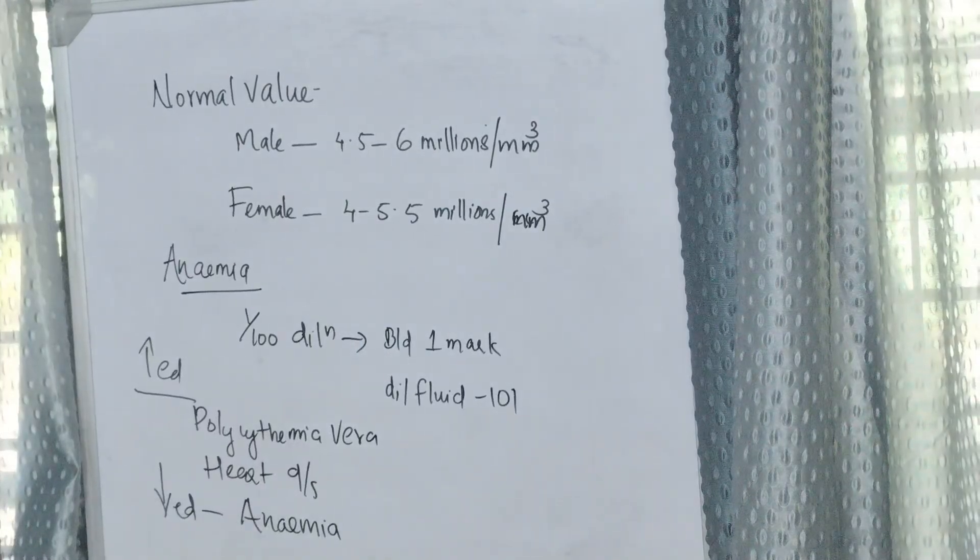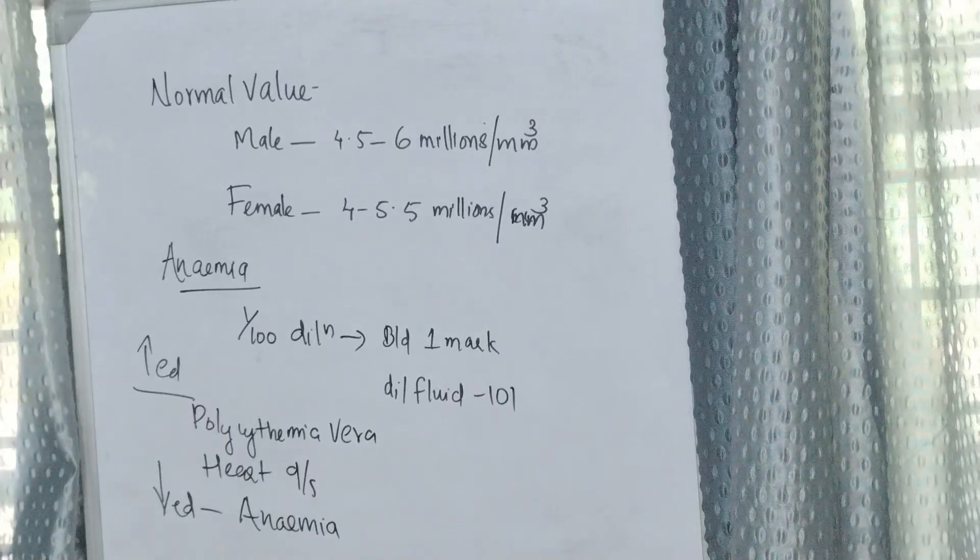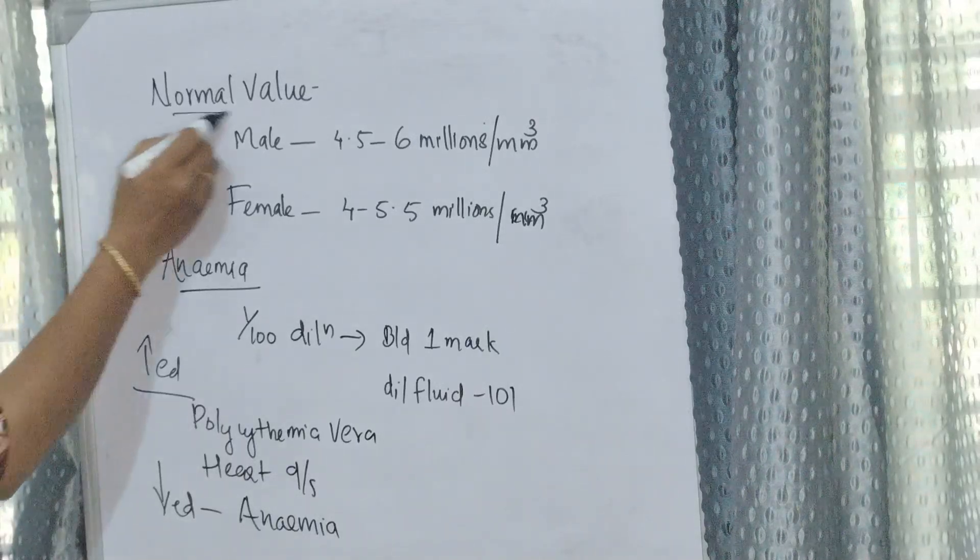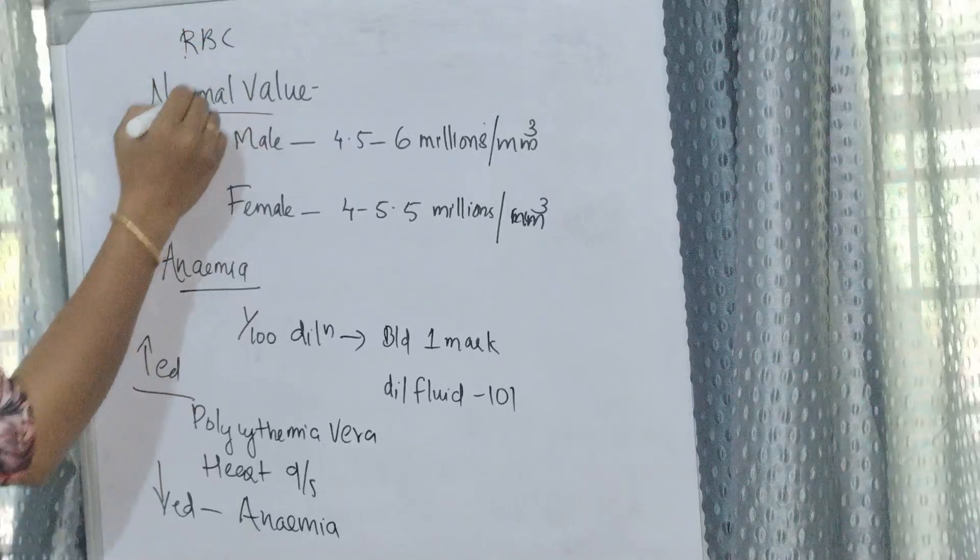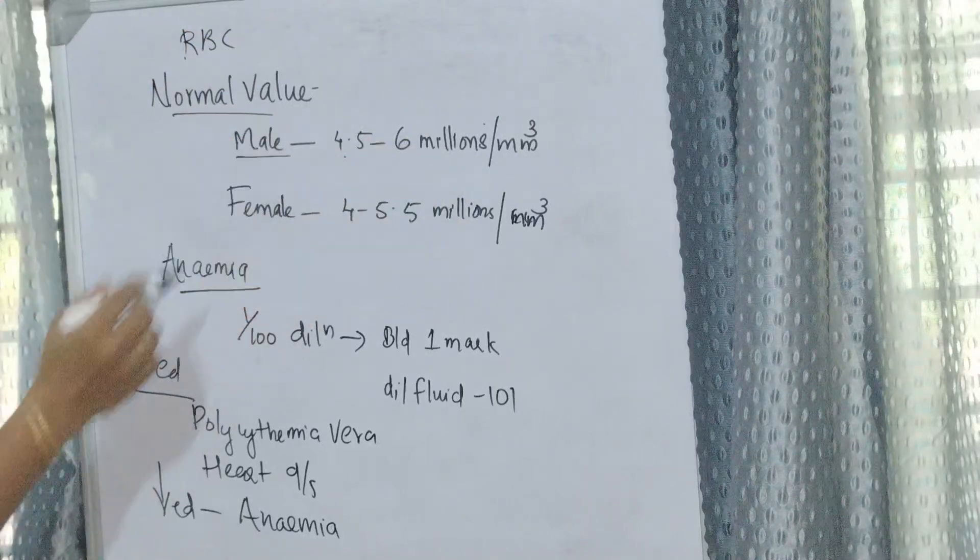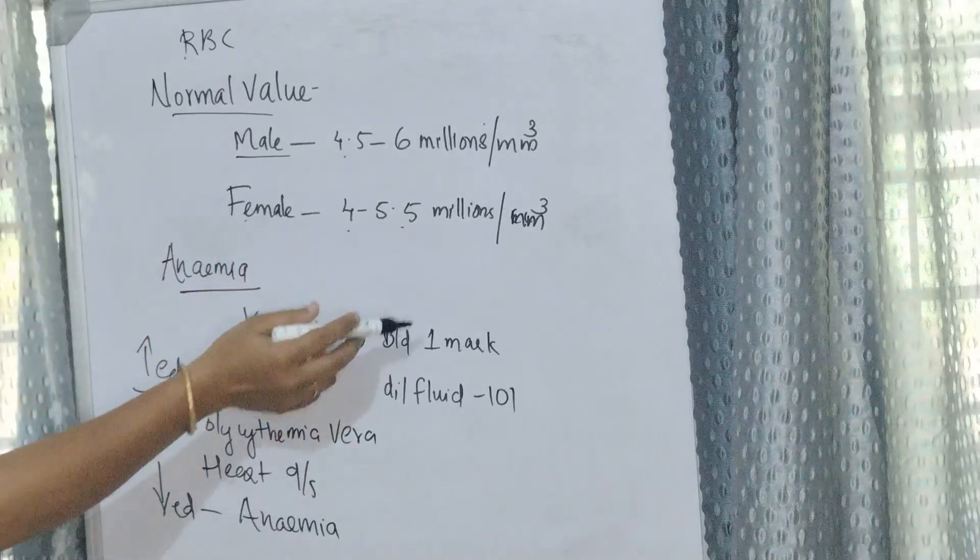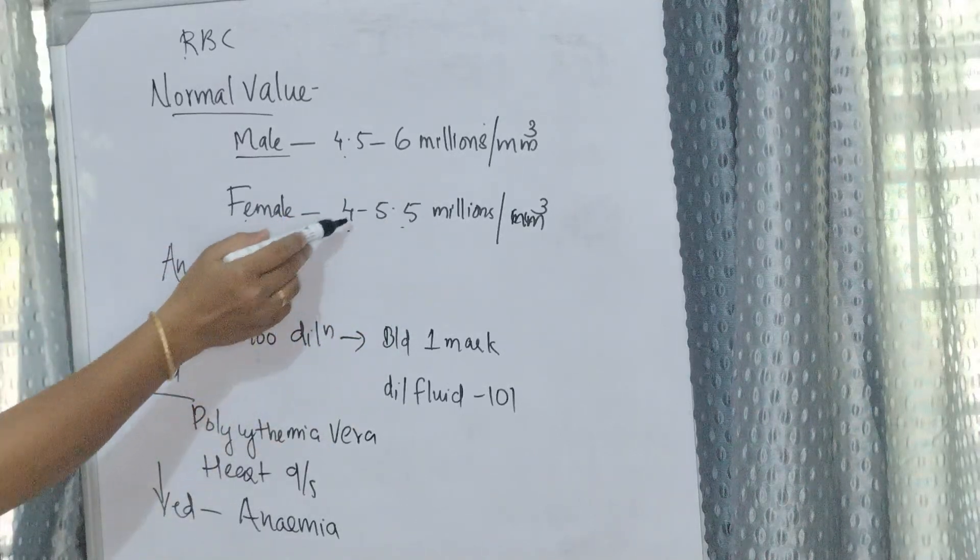Simply we can use the calculation factor for RBC count: N times 10,000. Normal value of RBC count for male is 4.5 to 6 million per cubic millimeter, and for female it is 4 to 5.5 million per cubic millimeter.